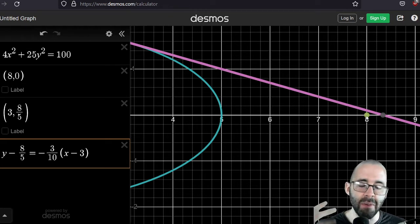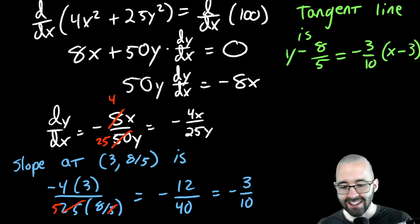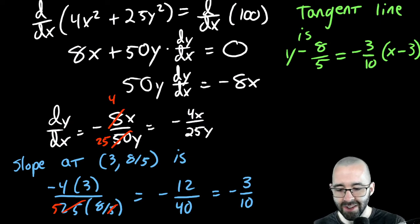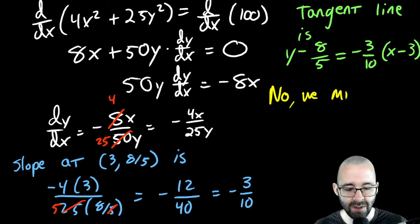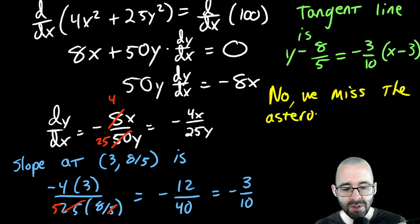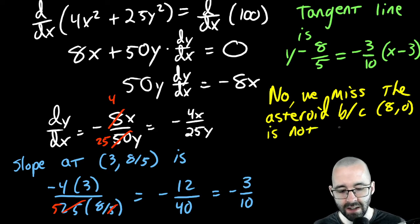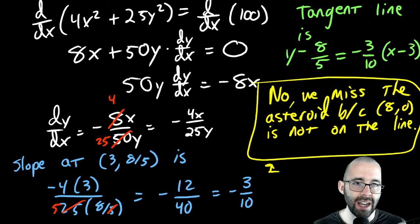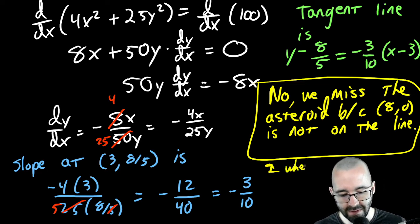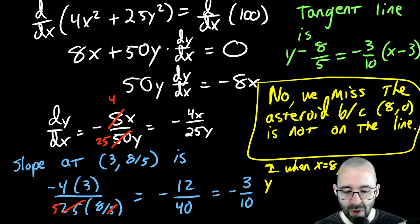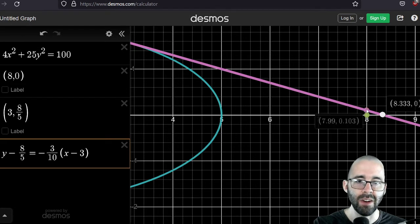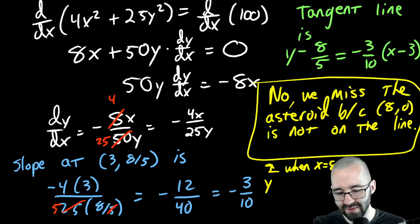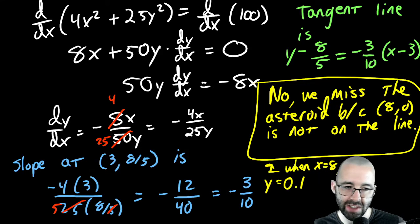The mathematical answer: no, we don't hit the asteroid. The official reason is that the point (8, 0) is not on the tangent line. You can verify this by plugging x = 8 into the tangent line equation and seeing that y is not zero — it's approximately 0.1.